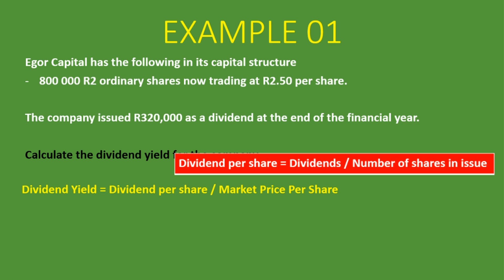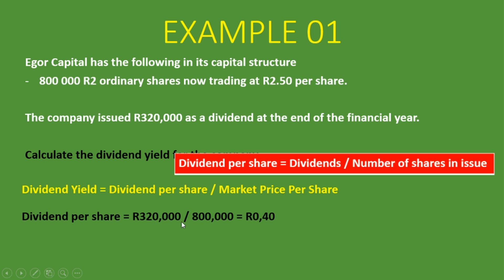You have to be careful if you're given a statement of financial position. Under the equity section, if you're given the rand amount for ordinary shares rather than the number of shares, you take that rand amount and divide by the book value per share — for example, R2 ordinary shares — to get the number of shares in issue. So, dividend per share = R320,000 ÷ 800,000 shares = 40 cents, or R0.40 per share. That is the dividend paid for each share the company has in issue.